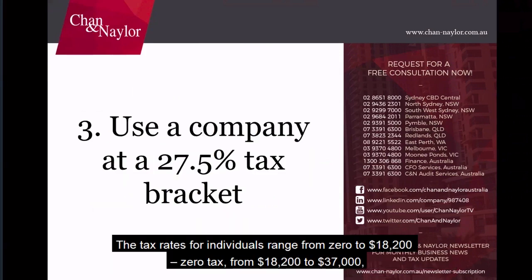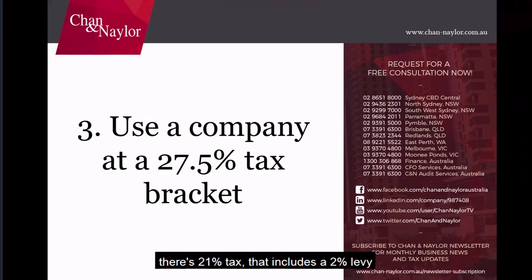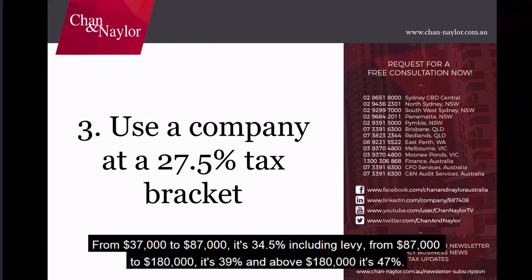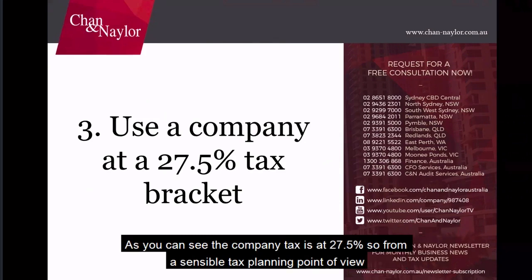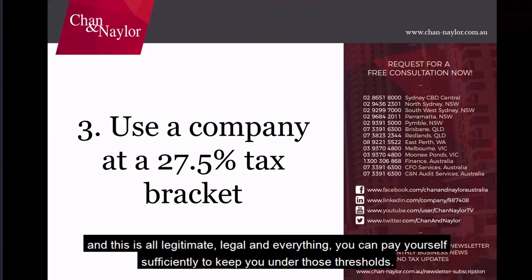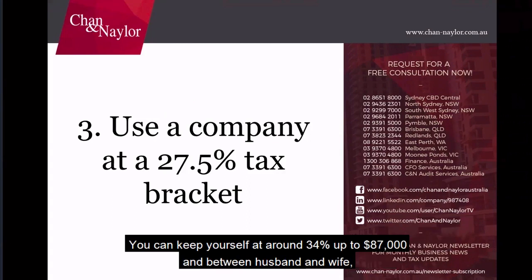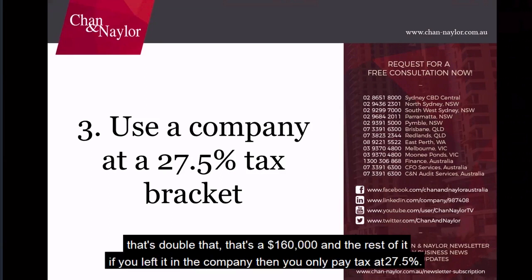Individual tax rates range: zero to $18,200 is zero tax; $18,200 to $37,000 is 21% including the 2% levy; $37,000 to $87,000 is 34.5% including the levy; $87,000 to $180,000 is 39%; and above $180,000 is 47%. The company tax rate is 27.5%. From a tax planning point of view — all legitimate and legal — you can pay yourself enough to stay under those thresholds, keeping yourself at around 34% up to $87,000. Between husband and wife that's double, around $160,000, and the rest left in the company is taxed at only 27.5%.